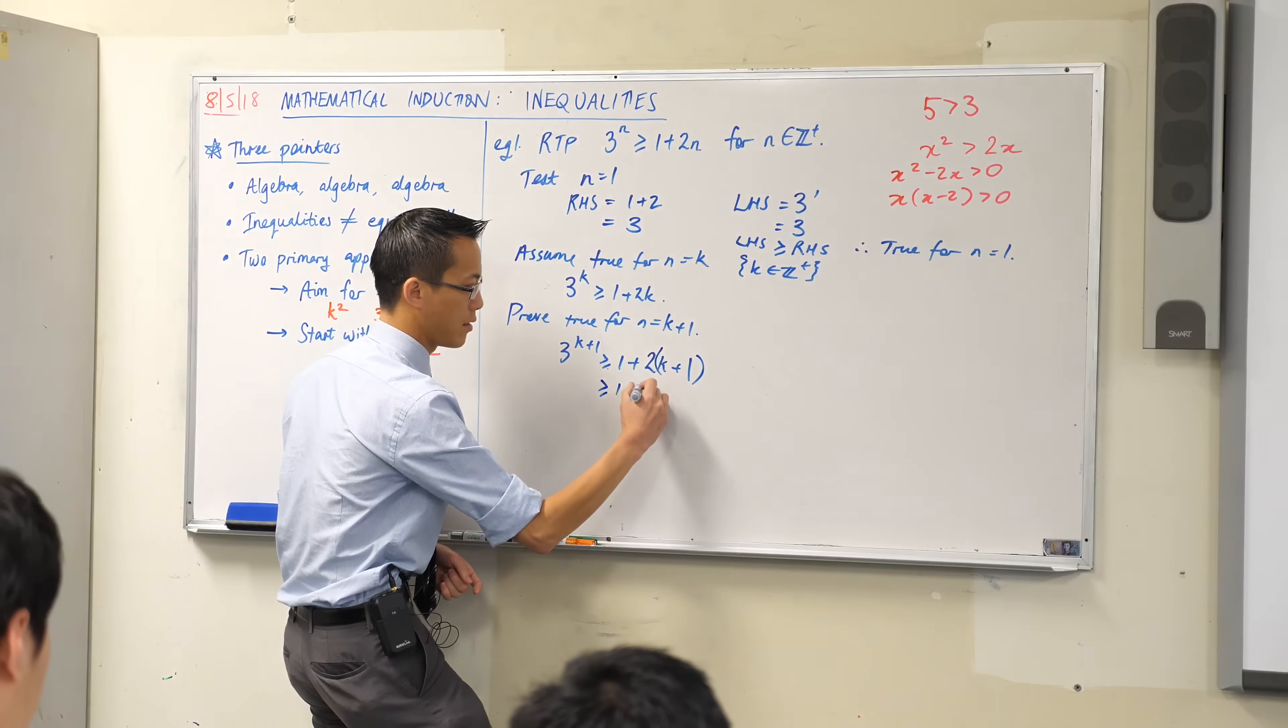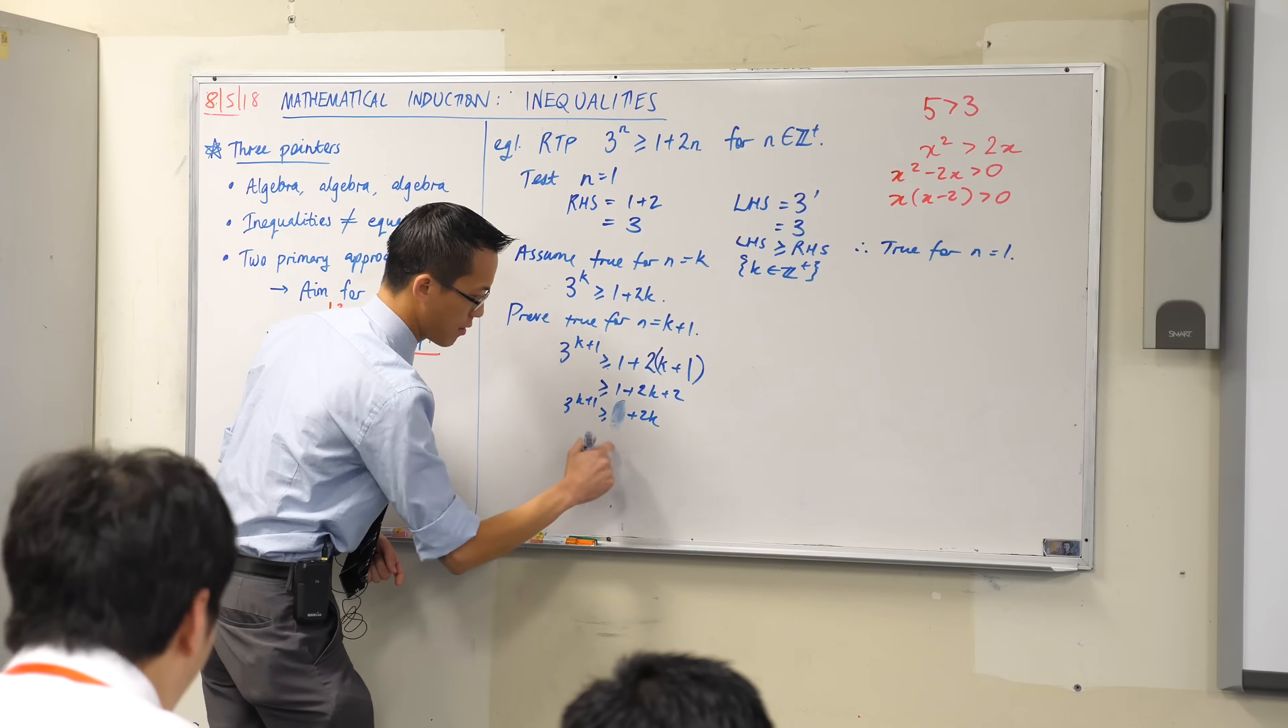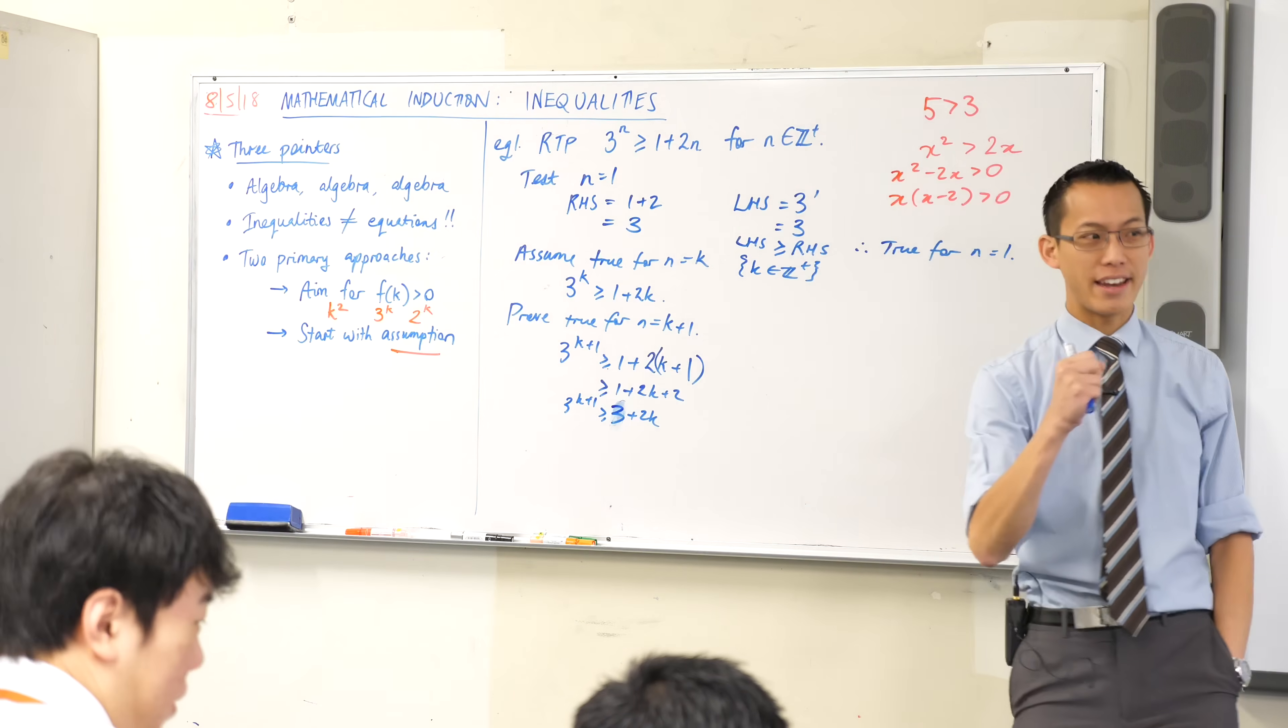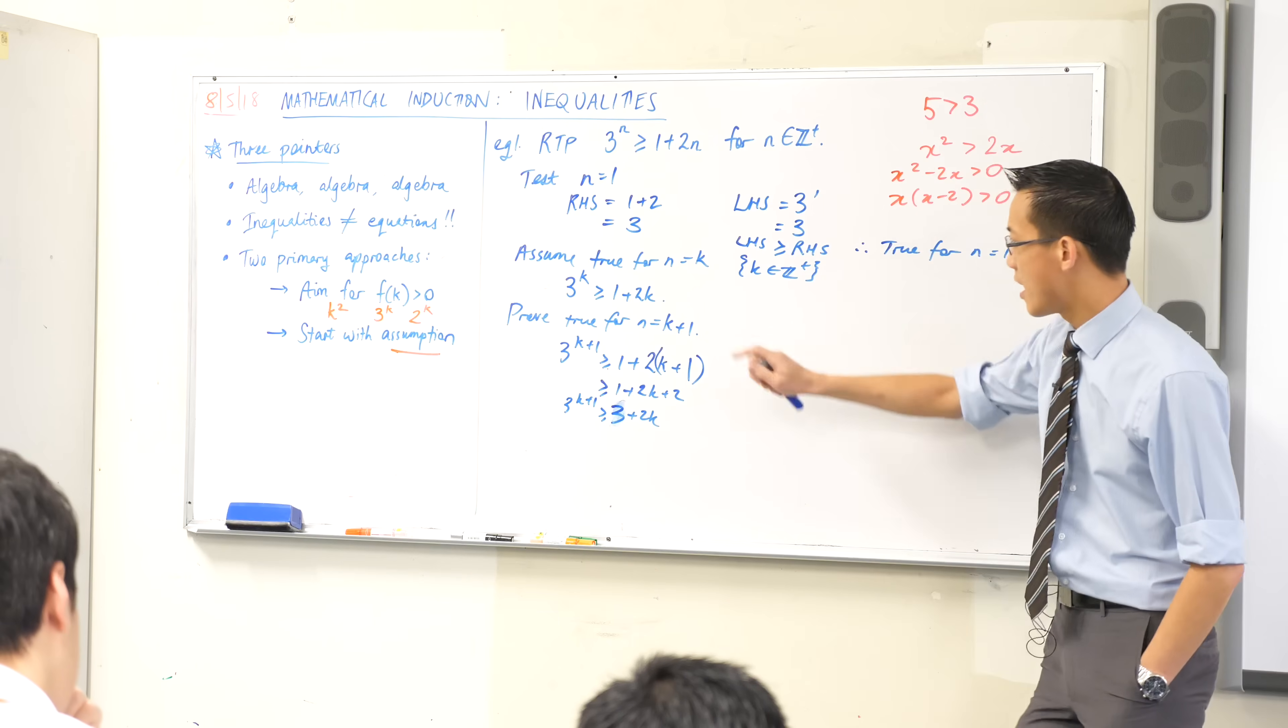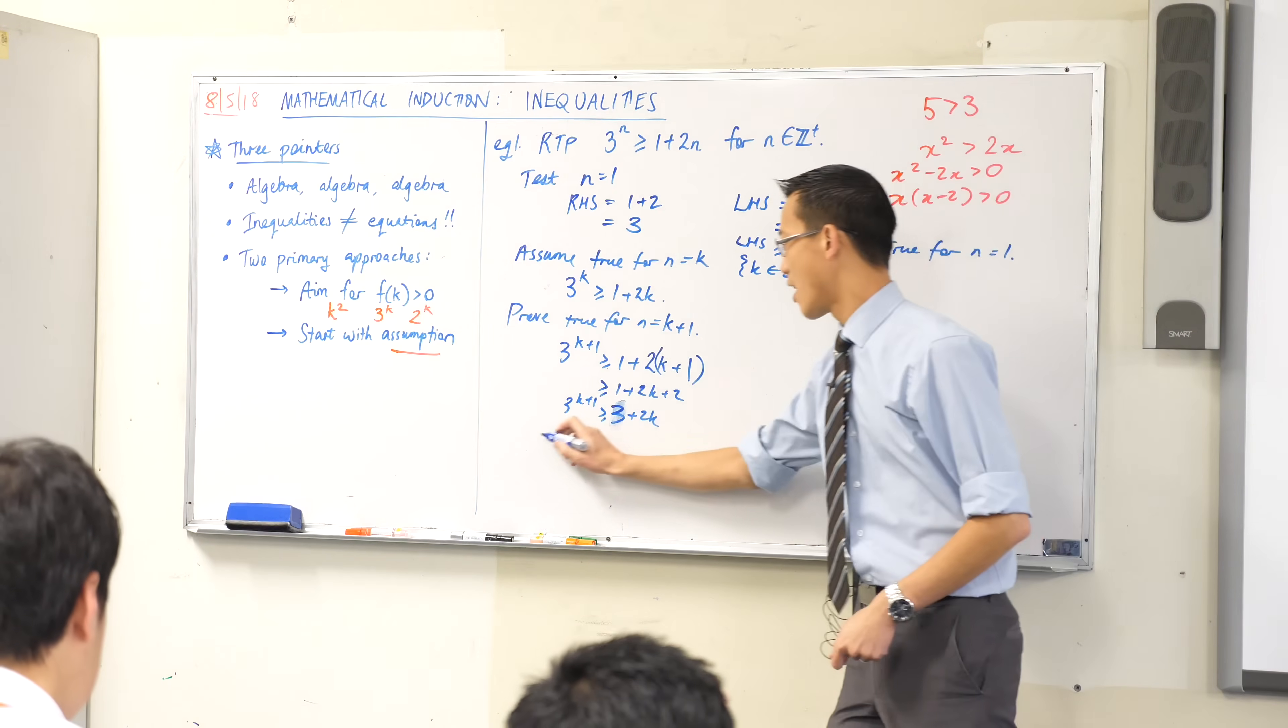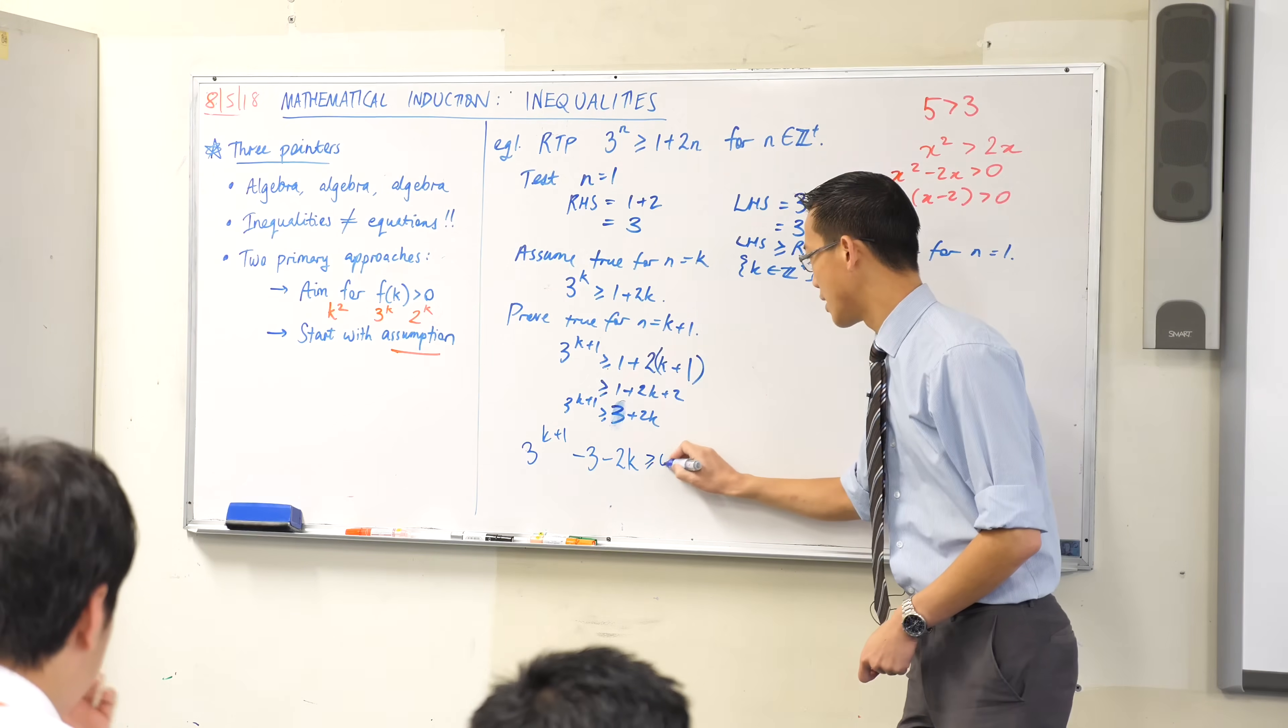And you're going to run into some trouble later on if you don't have that correct. I'm going to tidy this guy up a little bit. That's 2k plus 2. That's 3. So this is the statement I'm aiming to prove. And there are two primary strategies that we can use. I can aim to get everything on one side and then prove it's positive. Or I could start with this line here, the assumption and then work with that.